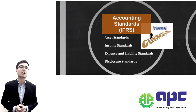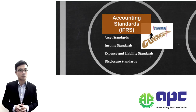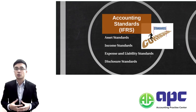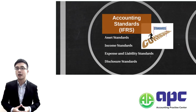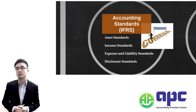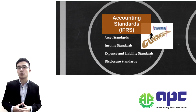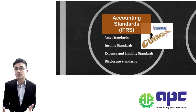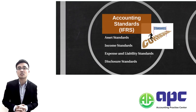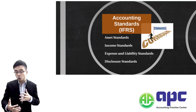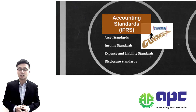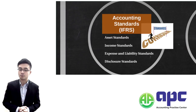The first category relates to asset standards — for example, inventory, property plant and equipment, agriculture such as biological assets, financial assets, intangible assets, investment properties, non-current assets held and discontinued operations, and some other accounting standards as well.